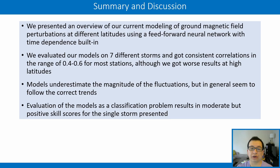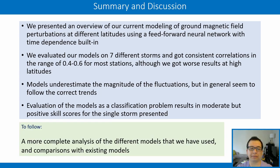To summarize, we presented an overview of modeling ground magnetic field perturbations at different latitudes using a feed-forward neural network with built-in time dependence. We evaluated models on seven different storms and obtained consistent correlations in the range of 0.4 to 0.6 for most stations, though results were worse at high-latitude stations. The models clearly underestimate the magnitude of fluctuations but generally follow correct trends, which is encouraging. The classification evaluation results in moderate but positive skill scores. We expect to present in the future a more complete analysis and comparisons with existing models. Thank you for your attention.